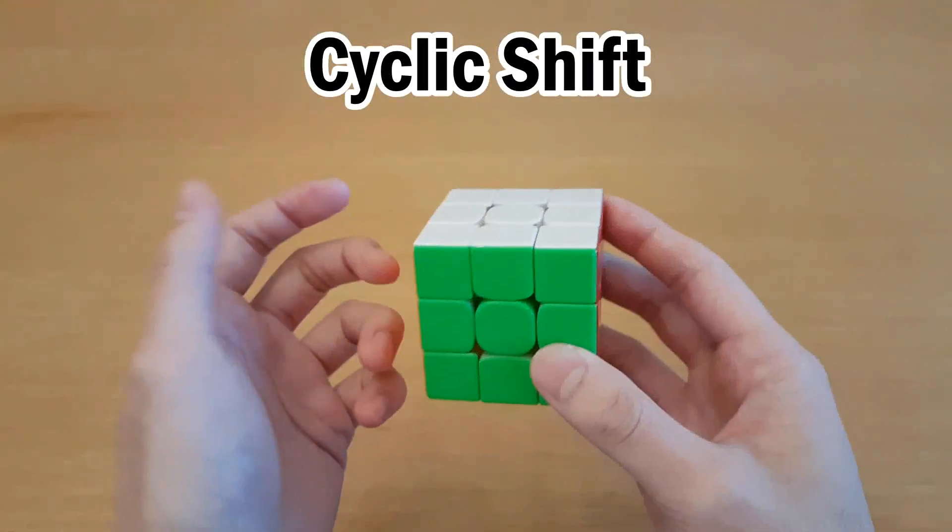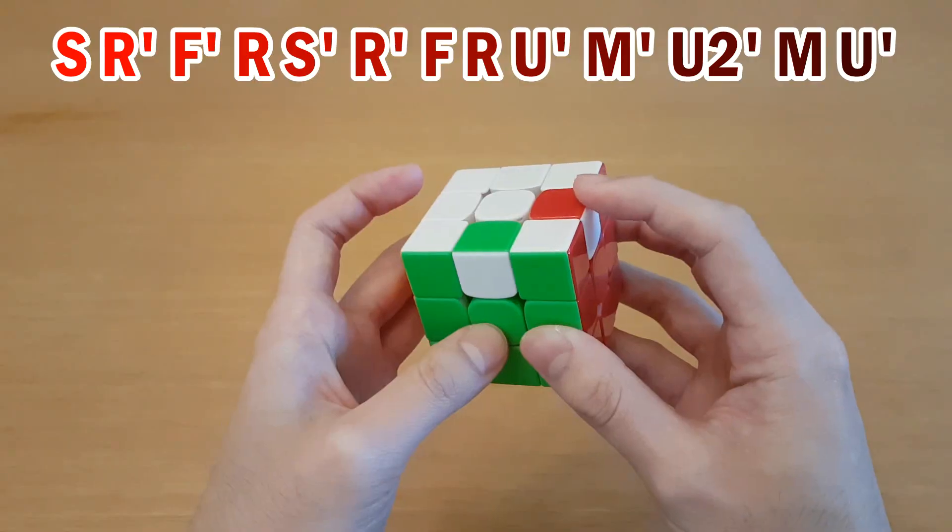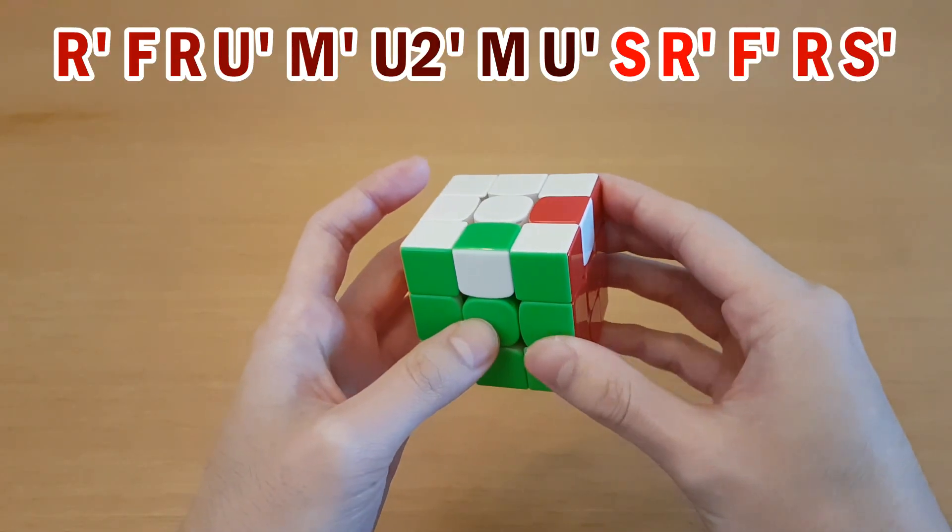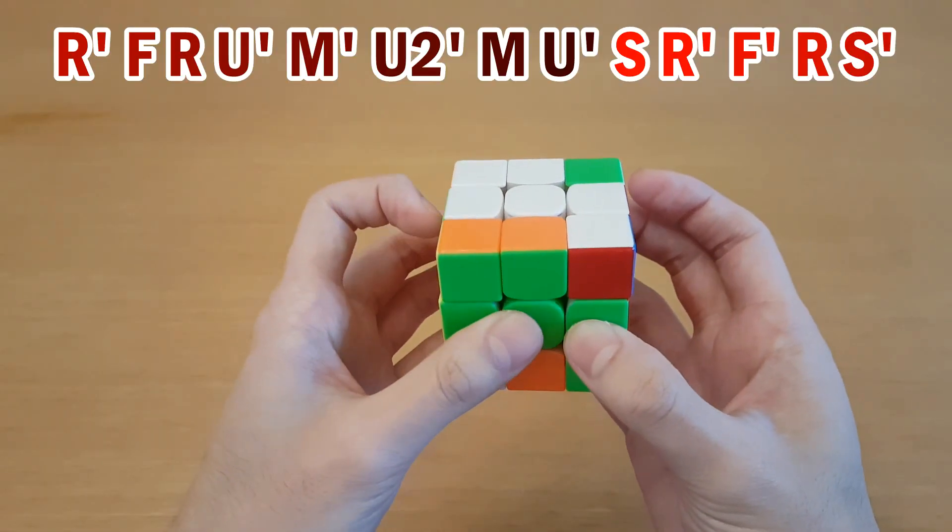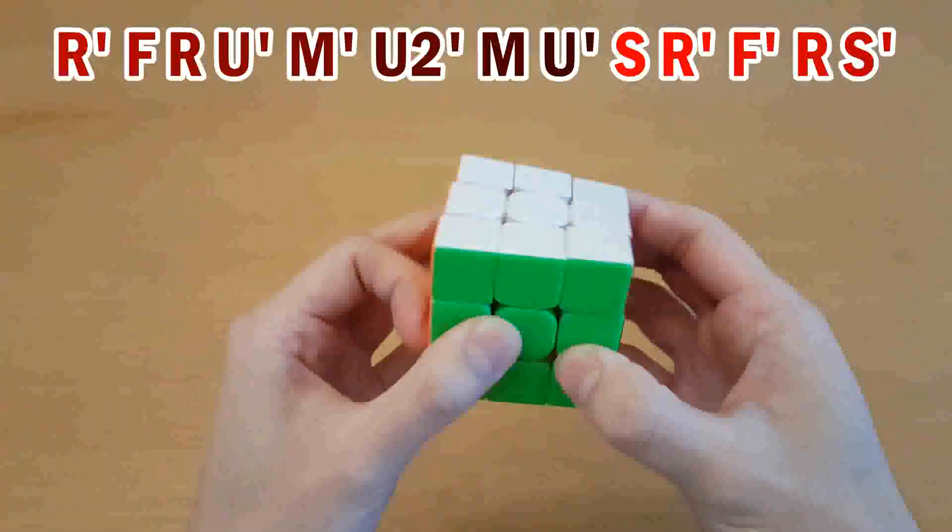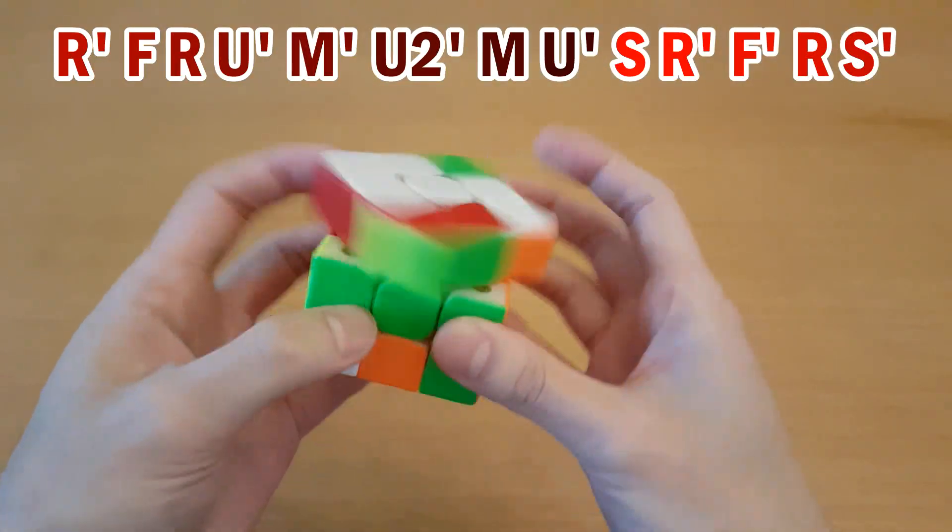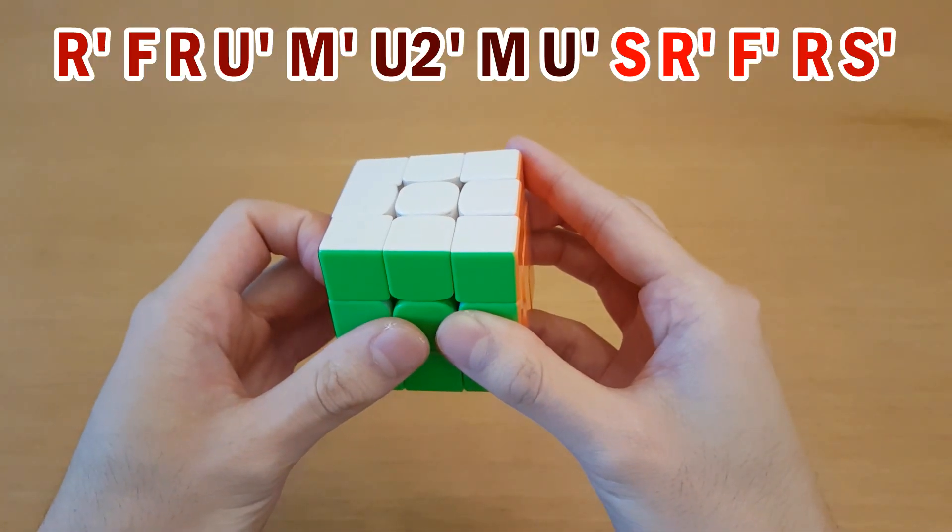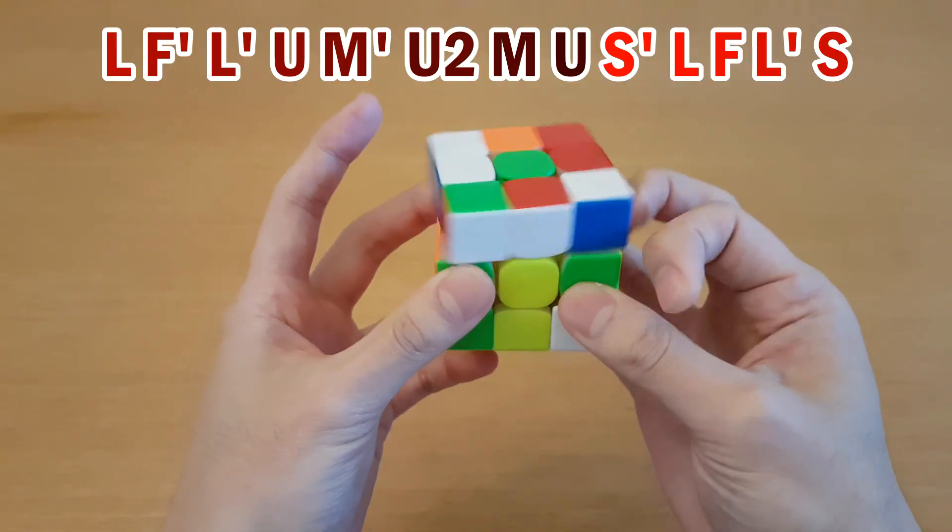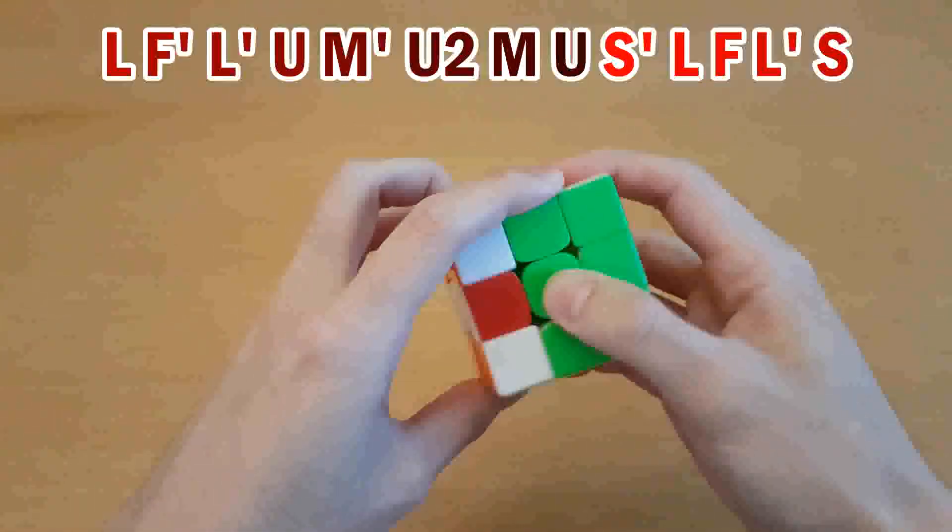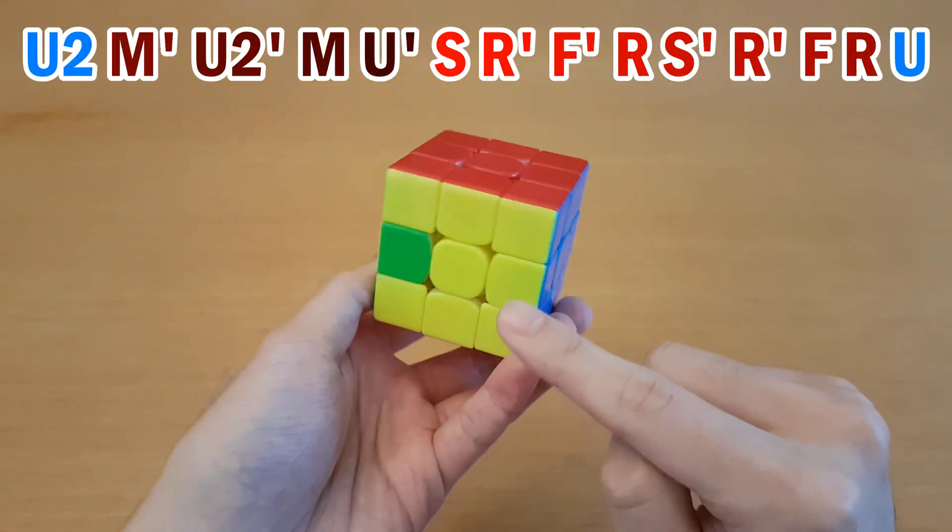For UR, you start the algorithm at the R' FR. Then go to the beginning. And we're done. For UL, same thing, but mirror the algorithm.